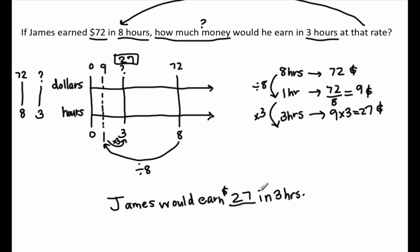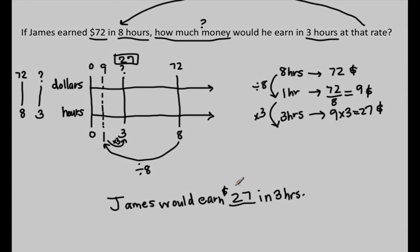We underline the quantity in the answer. Whenever you have a rate problem, you're going to use a double number line diagram to figure out what the answer is — and that's a quick way to draw it out.